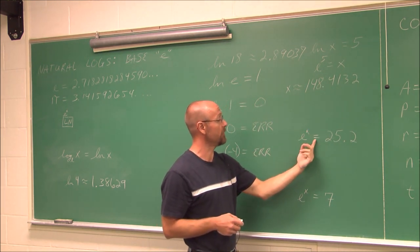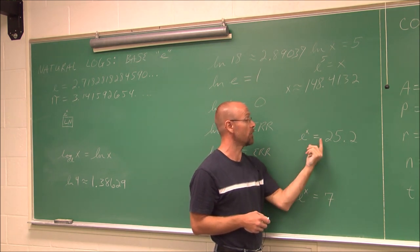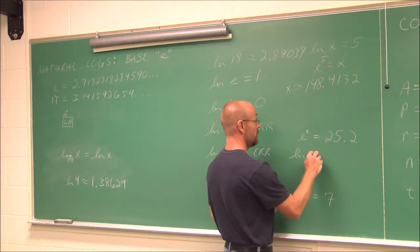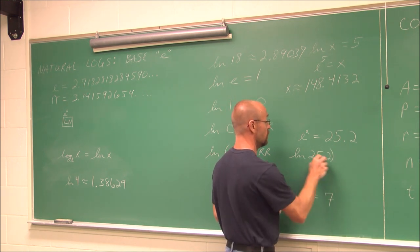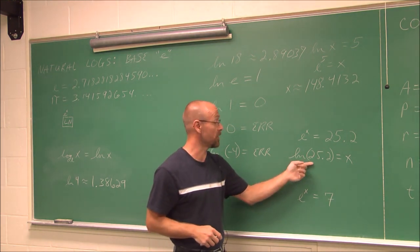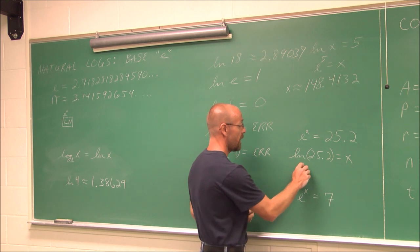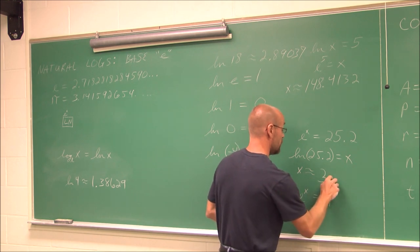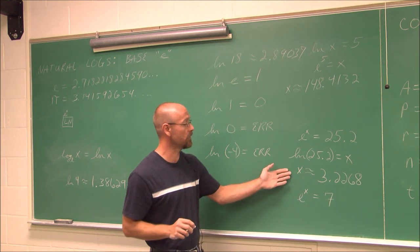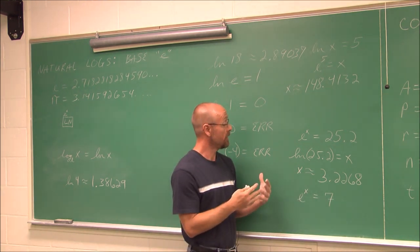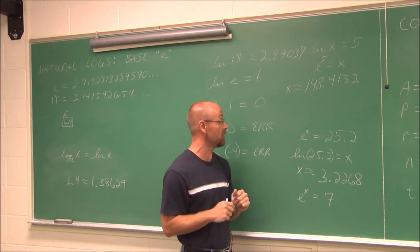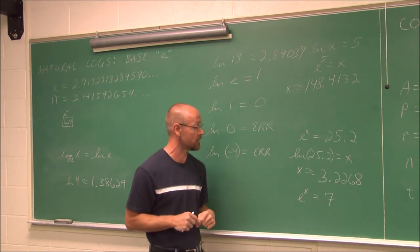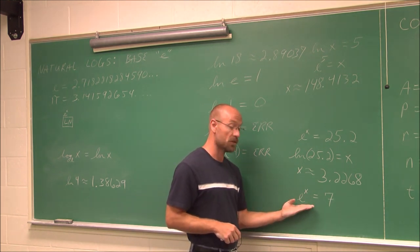What if we have e to the x power equals 25.2? I rewrite this as a logarithmic equation: ln of 25.2 equals x. Plugging into a calculator, I get approximately 3.2268. Since e is almost 3, and 3 cubed is 27 which is close to 25.2, this makes sense. Now try e to the x equals 7 on your own — rewrite it as a logarithm and solve for the power.